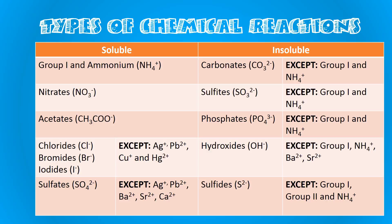This is an example of a solubility table. On the left-hand side it shows everything that is soluble — things you would represent with 'aq' for aqueous in an equation. Anything in group one or ammonium is always soluble, as are nitrates and acetates. Chlorides are generally soluble except for silver, lead, copper, or mercury. Sulphates are always soluble except for silver, lead, barium, strontium, or calcium.